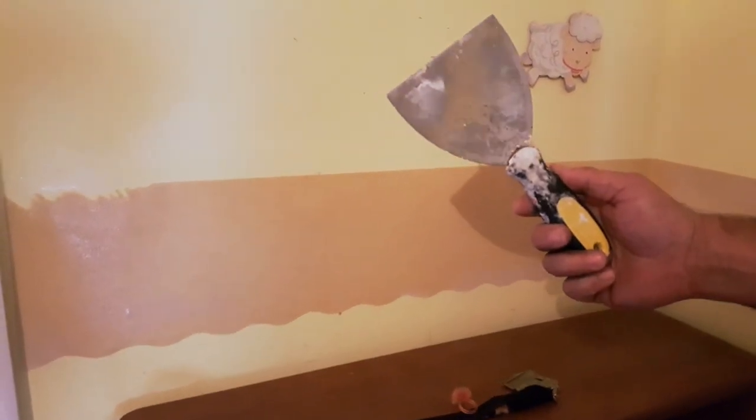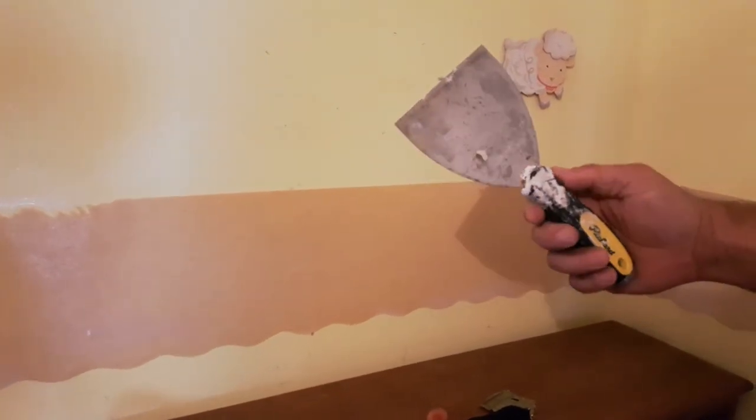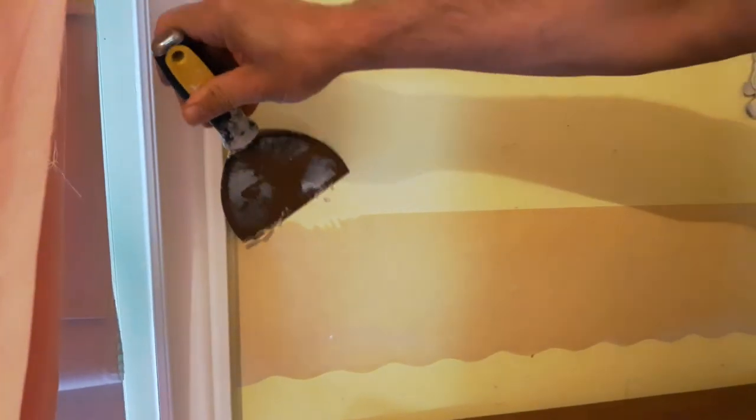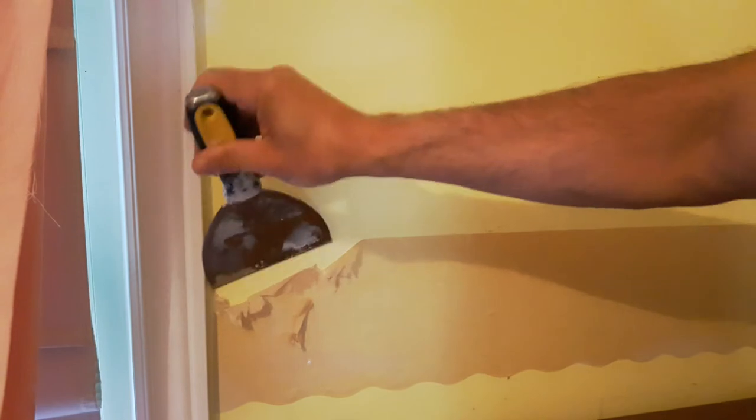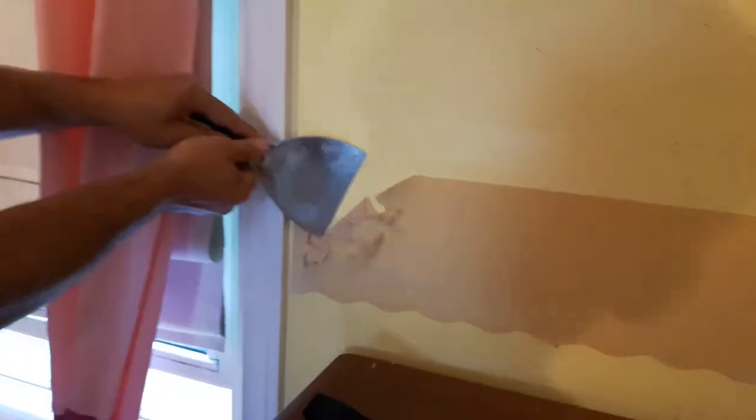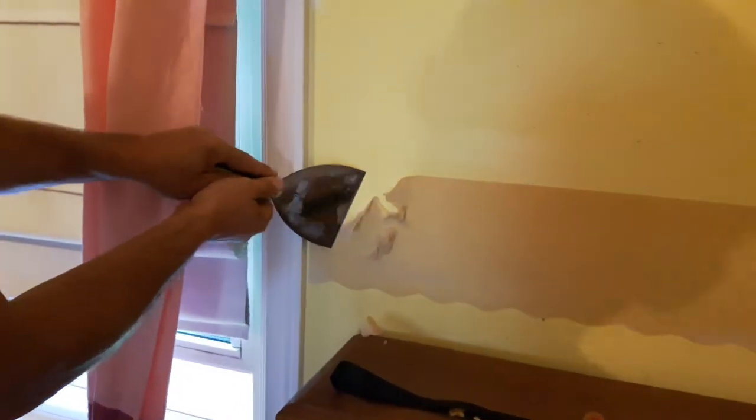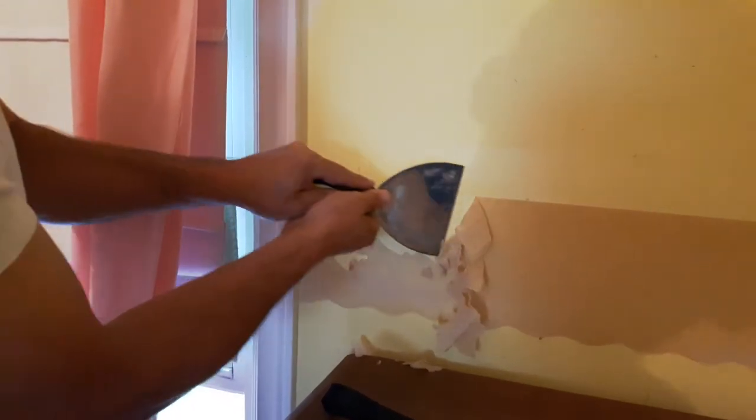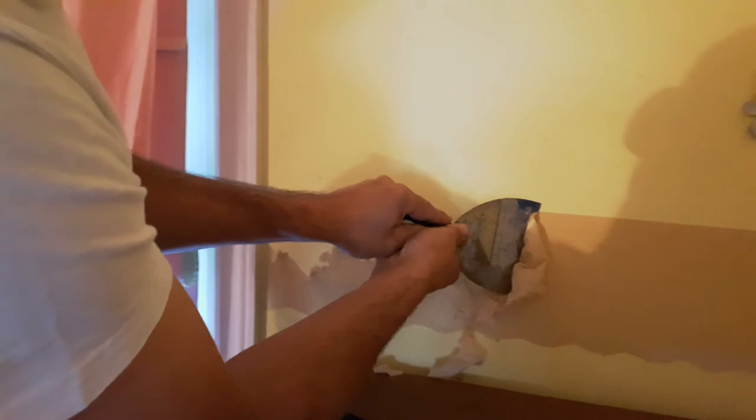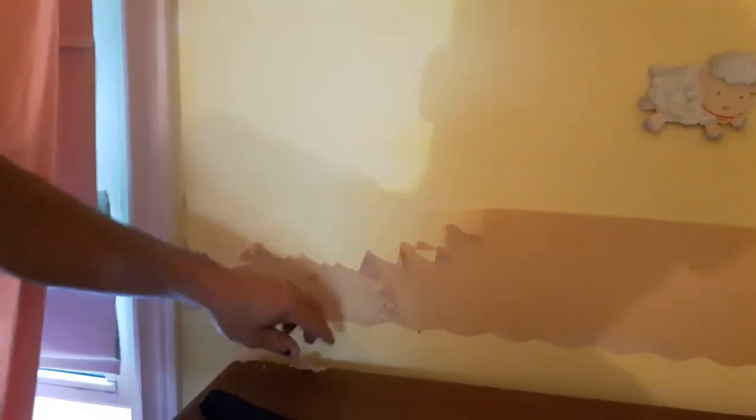Then I have this, just my putty knife, a wide scraper. I'm using it for this purpose. We want to get behind it. I'm going to go on this side. What I found works best, you just run it along and it takes it all right off.